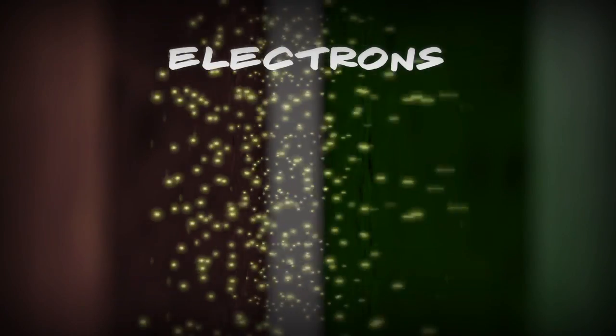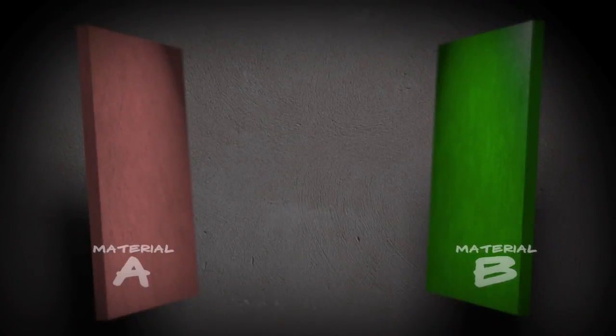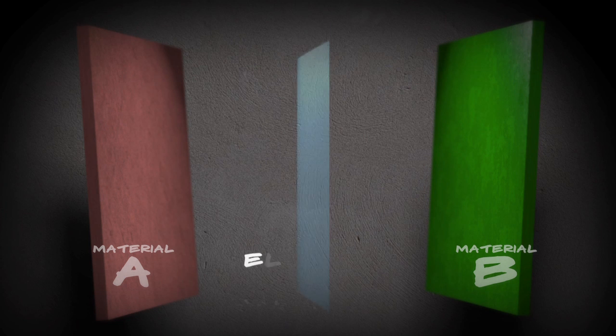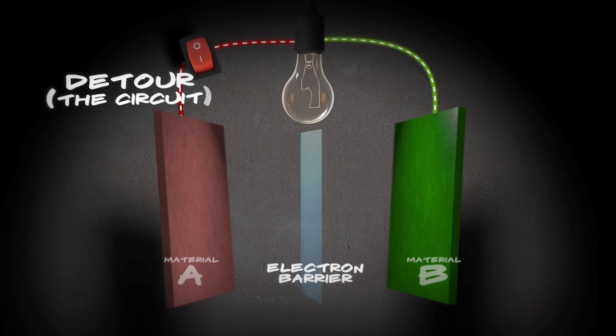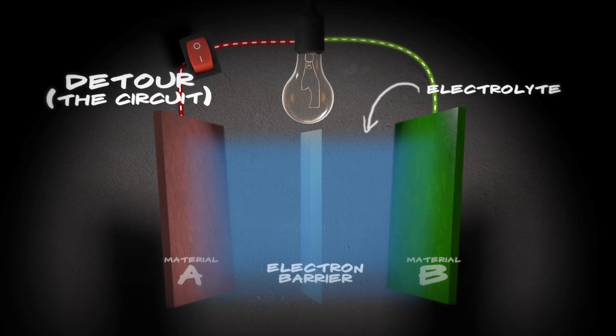In fact, if you just put these two materials together, electrons would just hop from one to the other. They would take a shortcut. To stop electrons from taking the shortcut, you need to add a barrier that forces them to take a detour. This detour is the circuit. In other words, the thing you're powering with the battery. And finally, you need something for ions to move around in. Here's how it works.